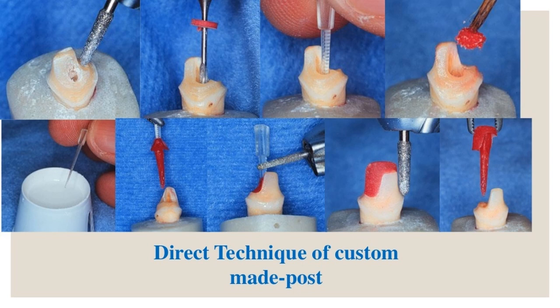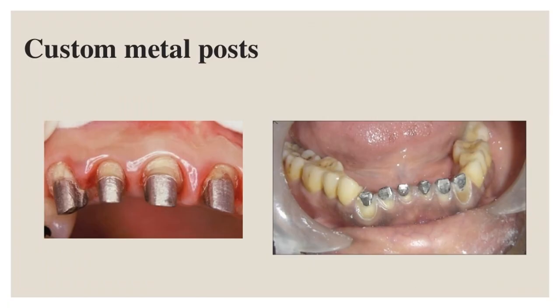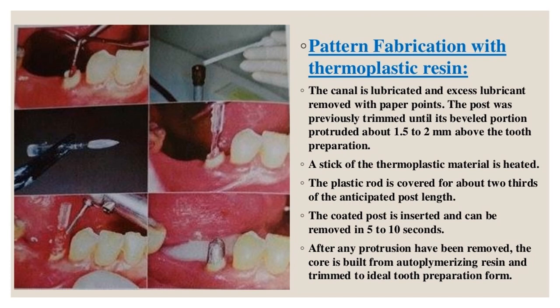Pattern fabrication with thermoplastic resin (custom metal posts): the canal is lubricated and excess lubricant removed with paper points. The post is trimmed until its beveled portion protrudes about 1.5 to 2 millimeters above the tooth preparation. A stick of thermoplastic material is heated; the plastic rod is covered for about two-thirds of the anticipated post length. The coated post is inserted and can be removed in 5 to 10 seconds after any protrusions have been removed. The core is built from auto-polymerizing resin and trimmed to ideal tooth preparation form.